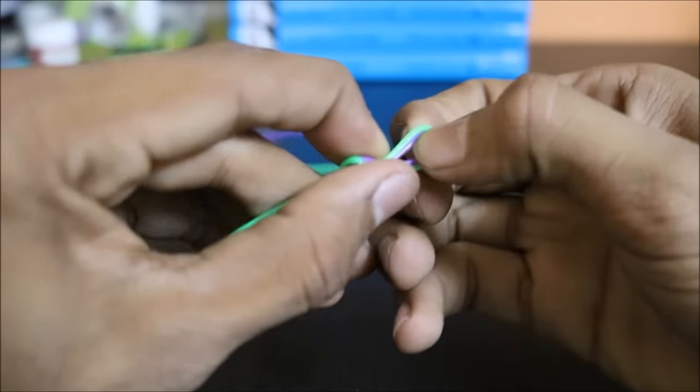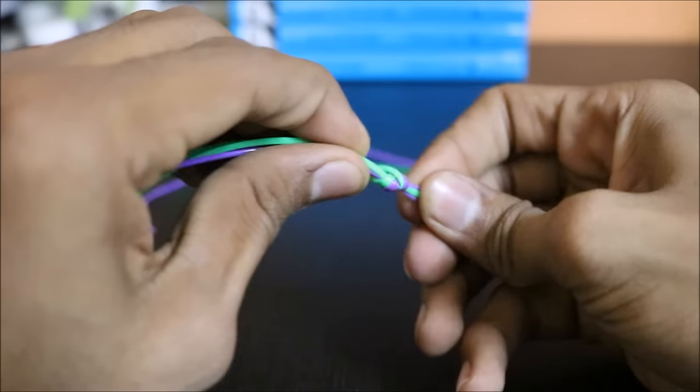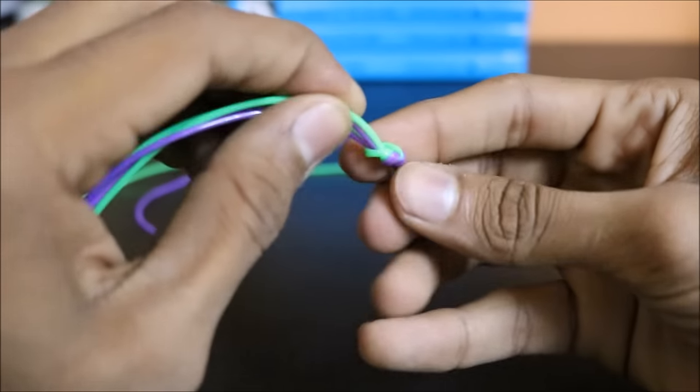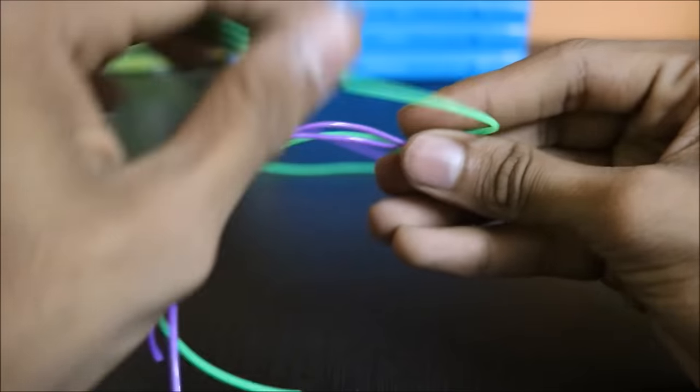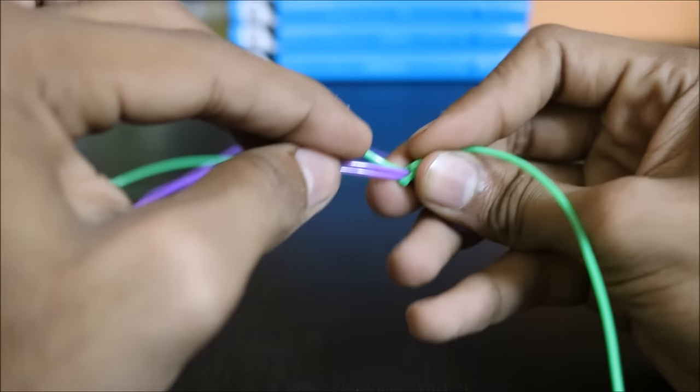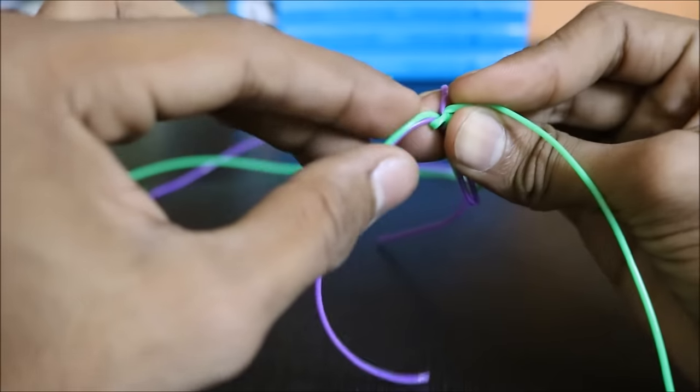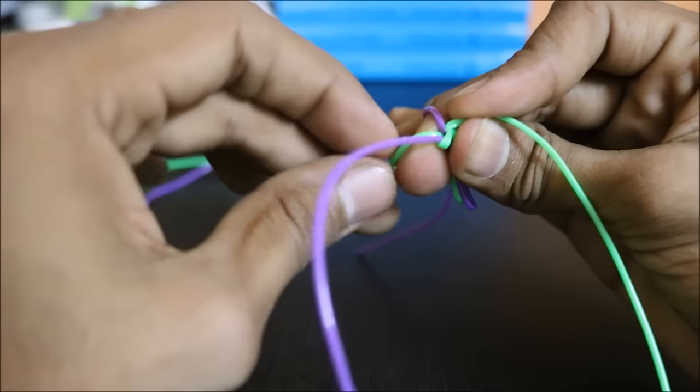Once you have this loop, you have the four strings around it. Take the four strings apart and keep the same color opposite, so you want two different colors on two different sides.